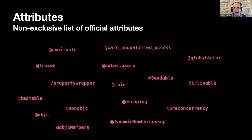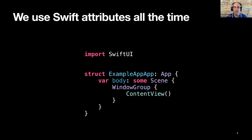I'll show a non-exclusive list of official attributes — there are quite a lot of them and you've likely encountered one or two. We use Swift attributes all the time. One example is generated code when using the Xcode template for creating an iOS app with a SwiftUI interface, where the struct is annotated with the @main attribute. This attribute can be applied to a structure, class, or enumeration declaration to indicate it contains the top-level entry point for program flow.